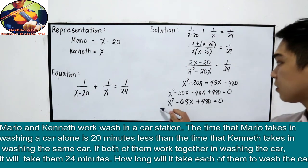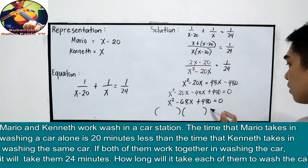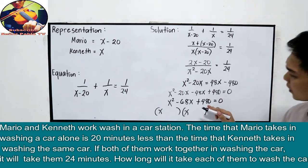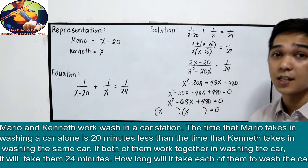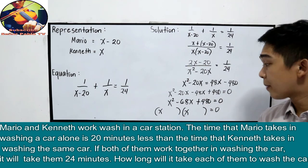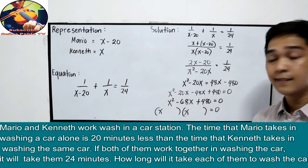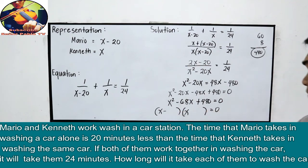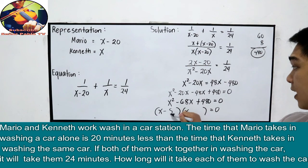Now, factor out. So, it's equal to 0. x and x. Factors of 480. Dapat ang sum is 68. Can we try 60 times 8? 60 times 8, tama ba? 6 times 8, 48. Saka ito, 480. So, negative 8 and negative 60.